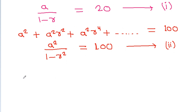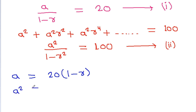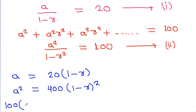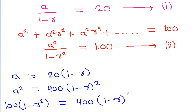From equation 1, we get a = 20(1-r). Squaring both sides gives a² = 400(1-r)². From equation 2, we get a² = 100(1-r²). Setting these equal: 100(1-r²) = 400(1-r)².